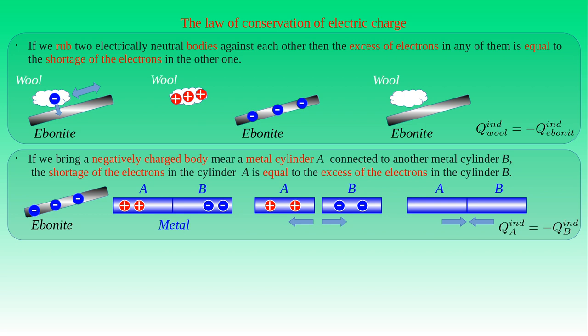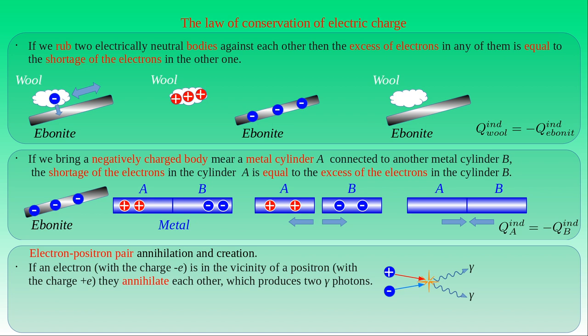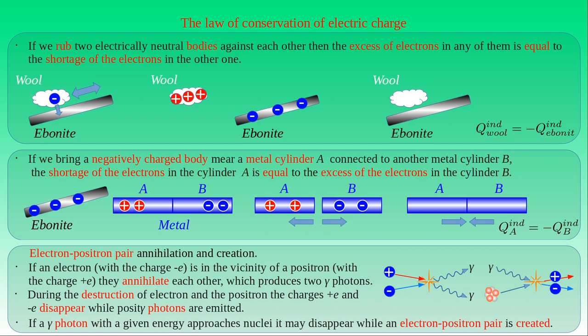Other important examples in atomic physics are the electron-positron pair creation and annihilation. When an electron with charge minus e and a positron with charge plus e collide at low energy, the process results in the annihilation of both particles and the creation of two gamma photons. During the destruction of the electron and the positron, the charges minus e and plus e disappear, and electrically neutral gamma photons are emitted. On the other hand, a gamma photon near a nucleus can also disappear while an electron-positron pair is produced. Both examples demonstrate the conservation of charge in the annihilation and creation of charged particles.